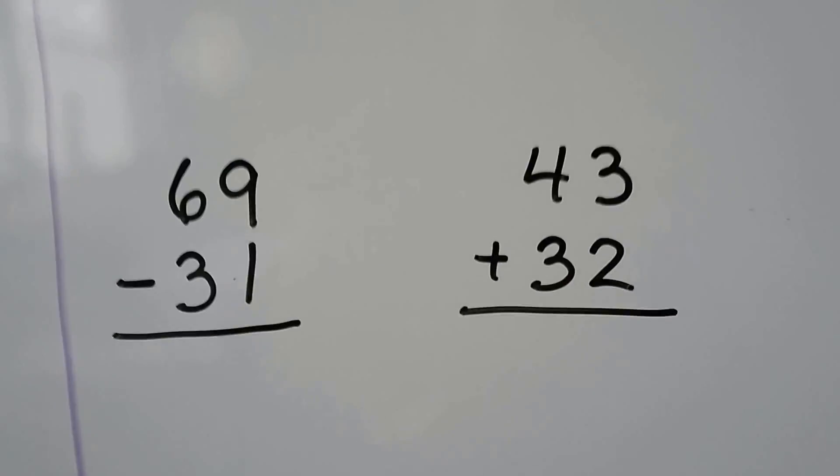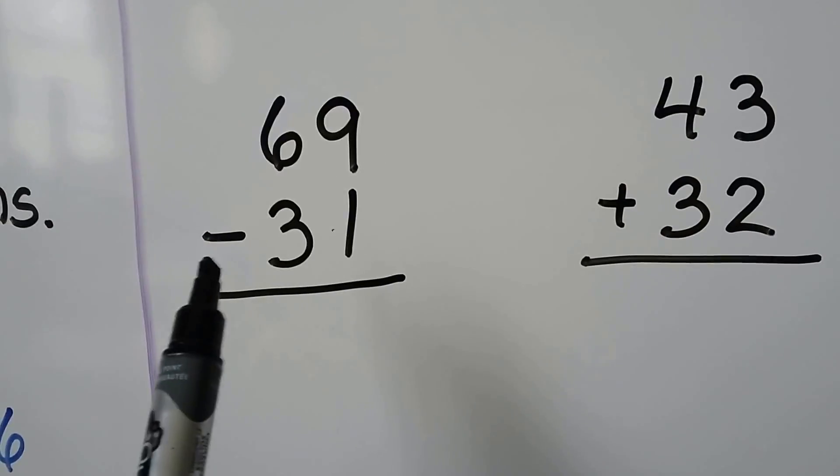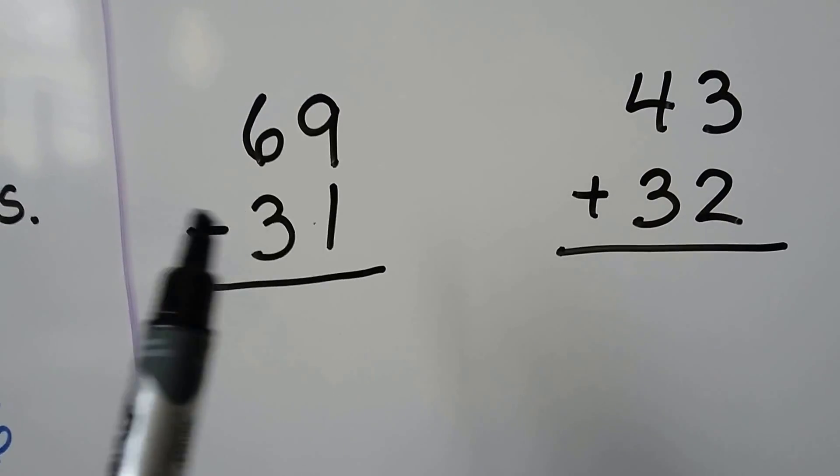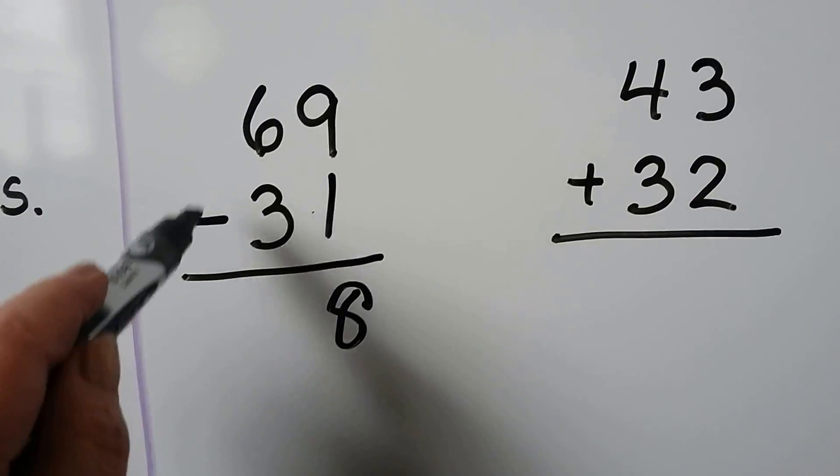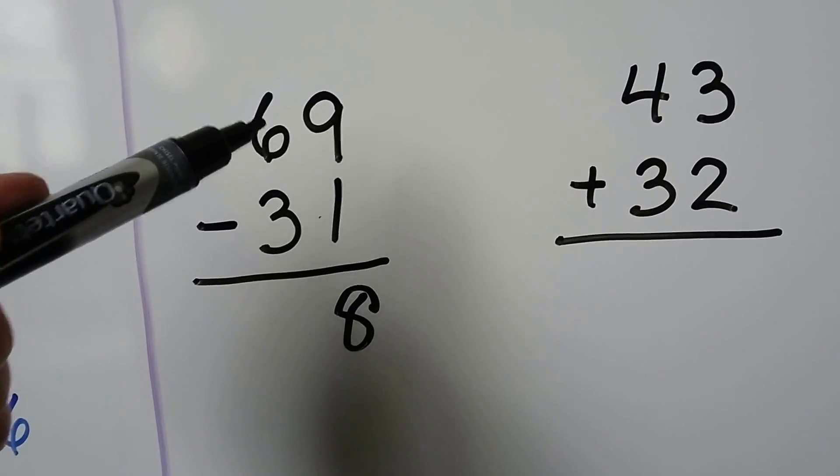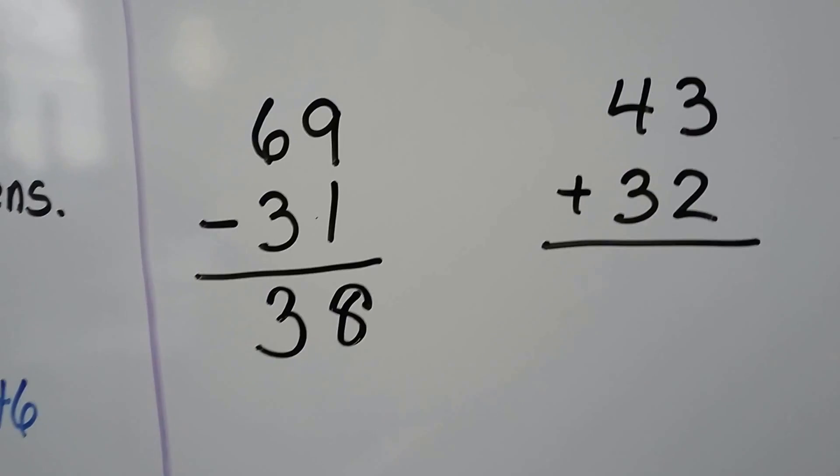We can also subtract with the place values. We start with the 1s. 9 minus, notice there's a minus sign, so we know it's subtraction. 9 minus 1 is 8. It's 1 less. 6 minus 3. We can start with 6 and count back 3. 6, 5, 4, 3. That's equal to 38.